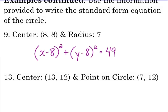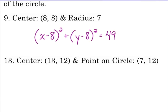Now number 13 is not quite so straightforward. They give us the center so we can go ahead and write the left side of the equation, x minus 13 squared plus y minus 12 squared, but we don't have the radius.